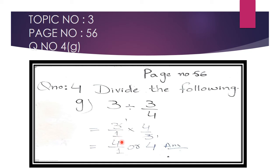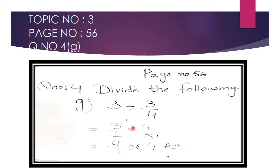We write 3 as 3/1. When dividing, we multiply by the reciprocal, so 3/4 becomes 4/3. We now have 3/1 × 4/3. We can cancel: the 3 in the numerator and the 3 in the denominator cancel each other. We are left with 4/1, which equals 4. The answer is 4.